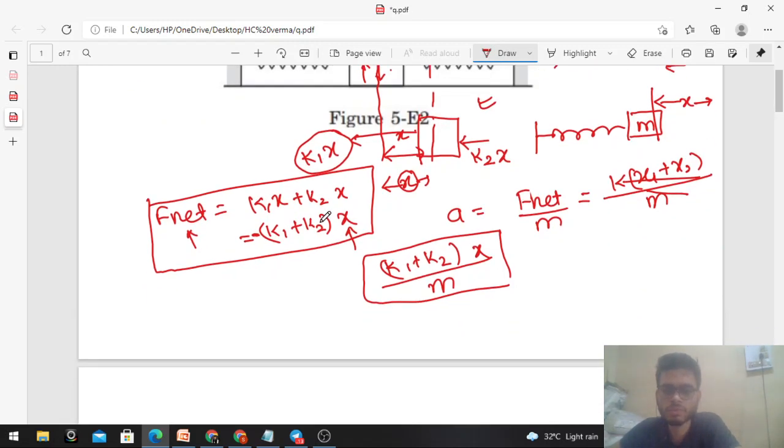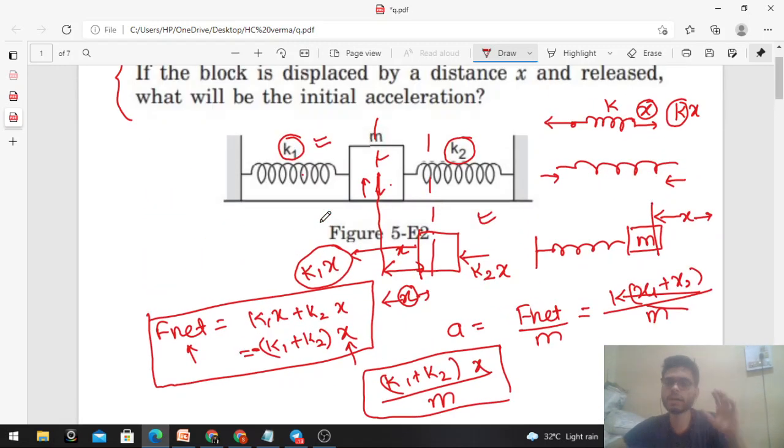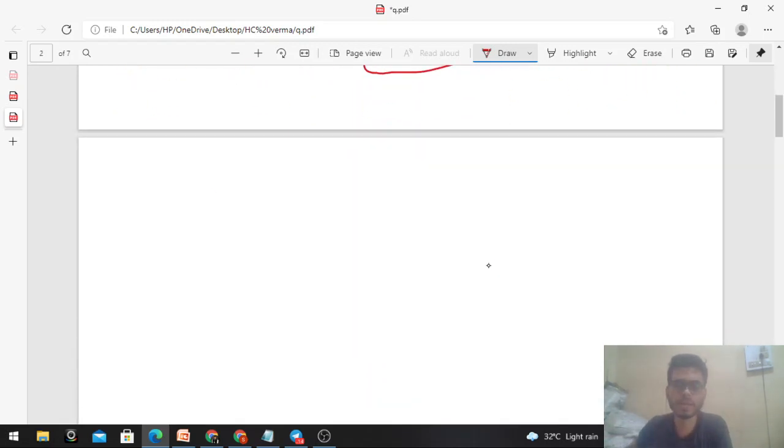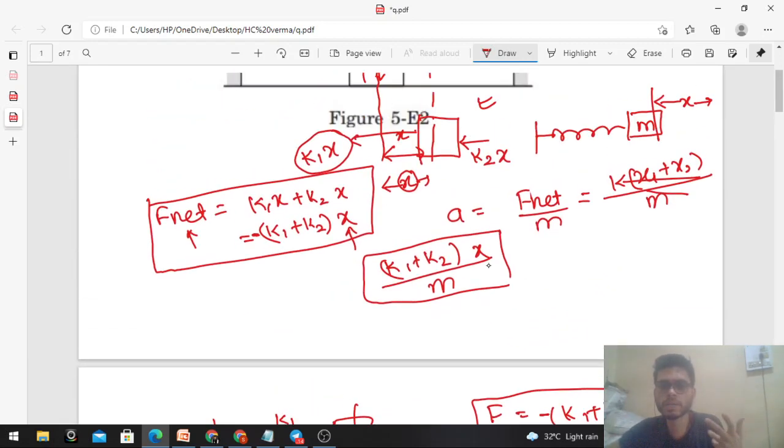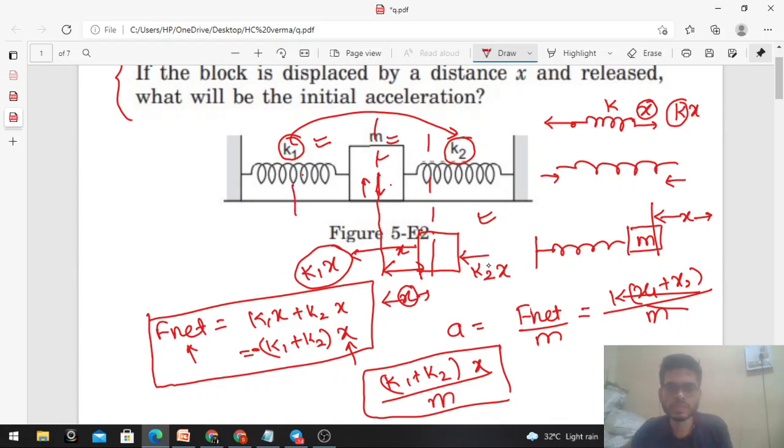This case is the same as the parallel case. Actually, the springs you're seeing may look like they're in series, but if you calculate the force, you'll find that K1 and K2 are actually in parallel with the block. In the parallel condition, when you connect a block to two springs K1 and K2, and displace the block by X, the force is K1 plus K2 into X in the backward direction. If you see above, the same force is coming out. Therefore, we can say that in the above spring-block system, the two springs are in parallel.